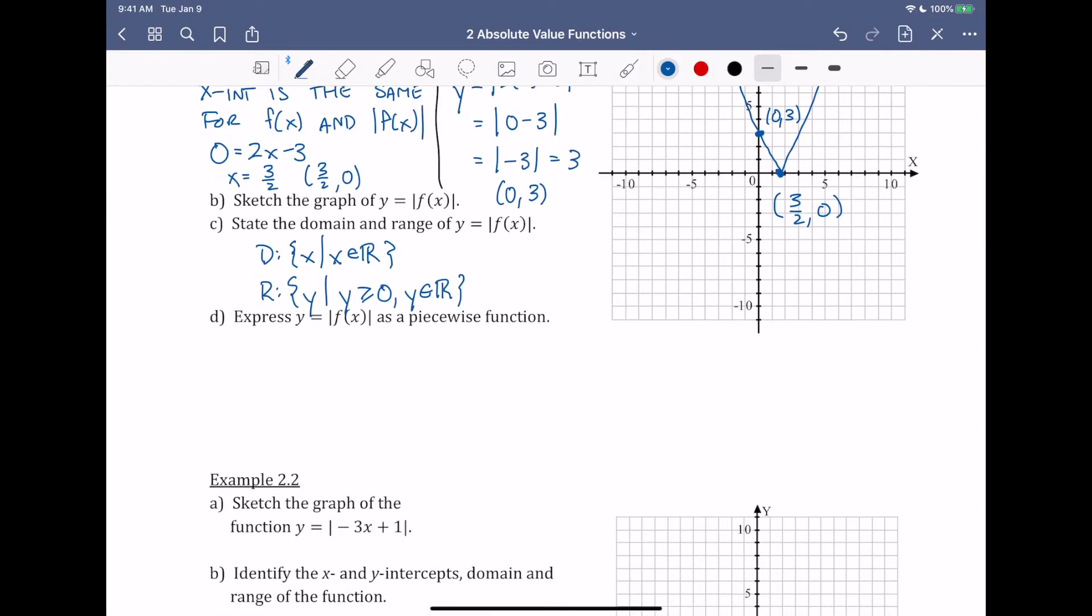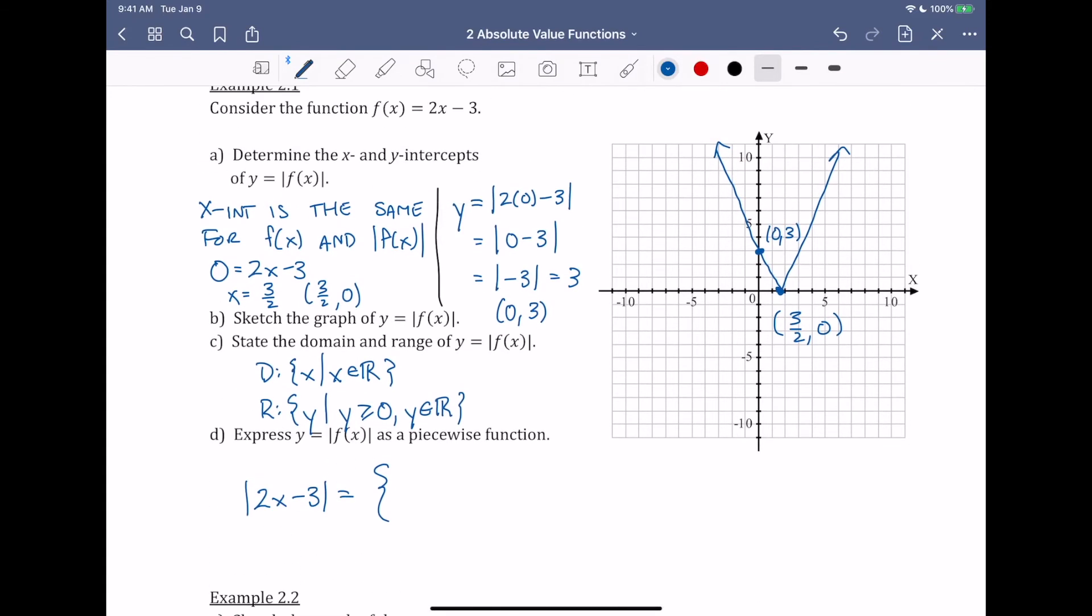Part D, express y = |f(x)| as a piecewise function. So what we're going to do here is we're going to take our function 2x - 3, and we're going to split it up. And the two parts we're going to split it up into are the part that's positive, and the part that has changed.